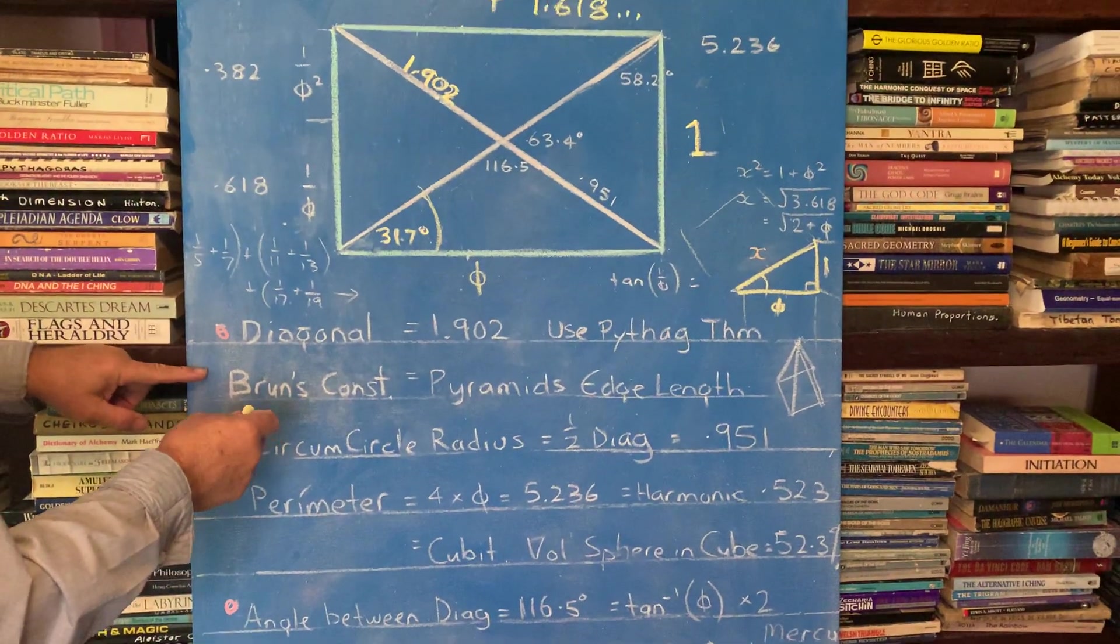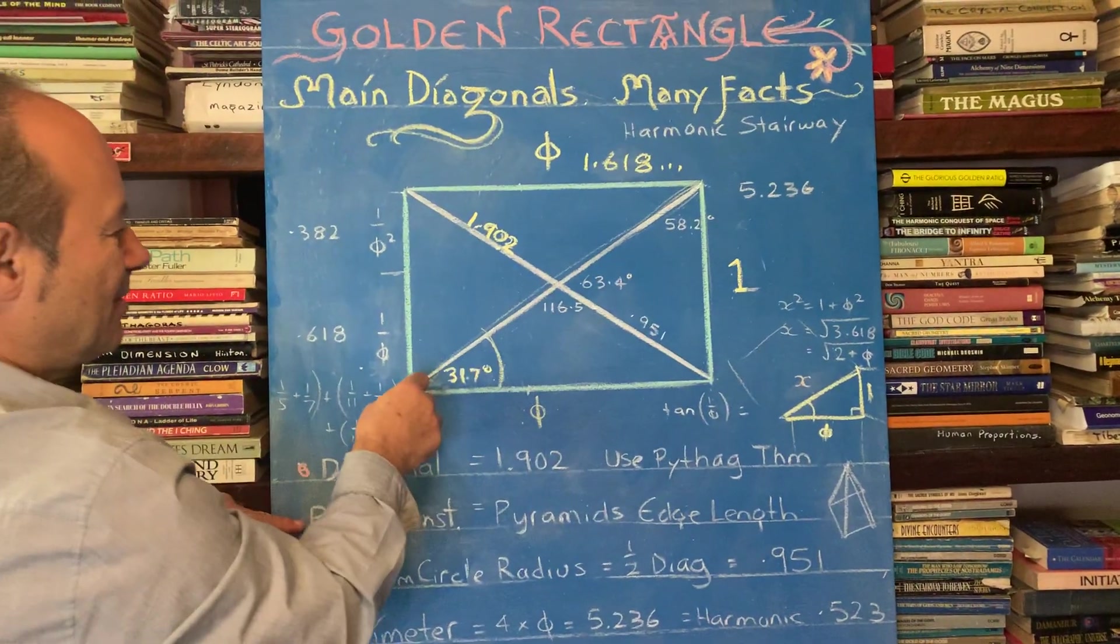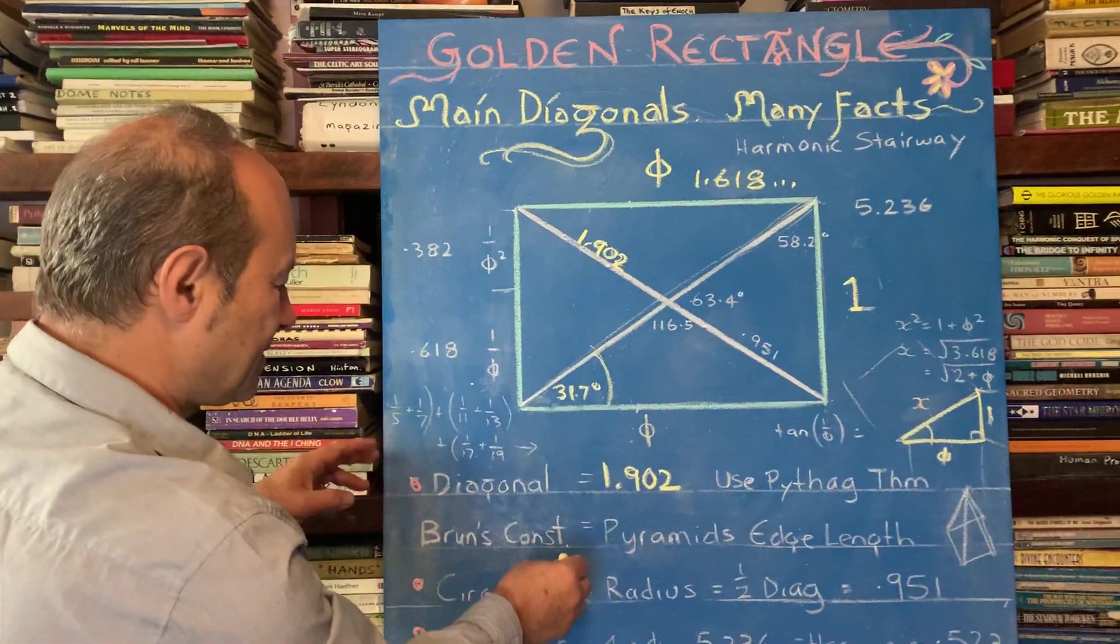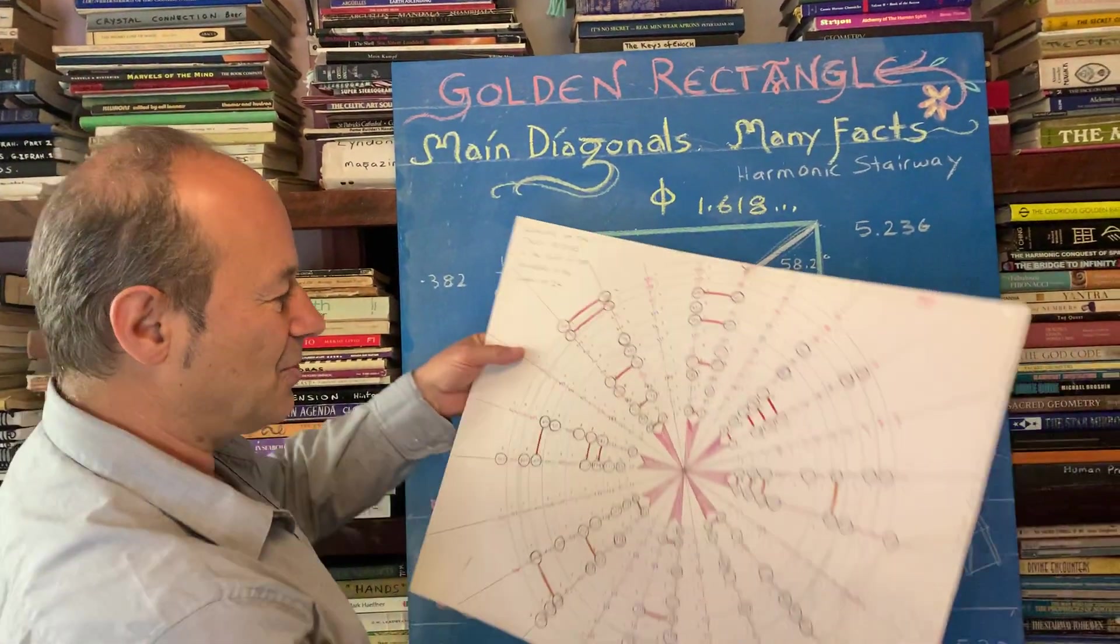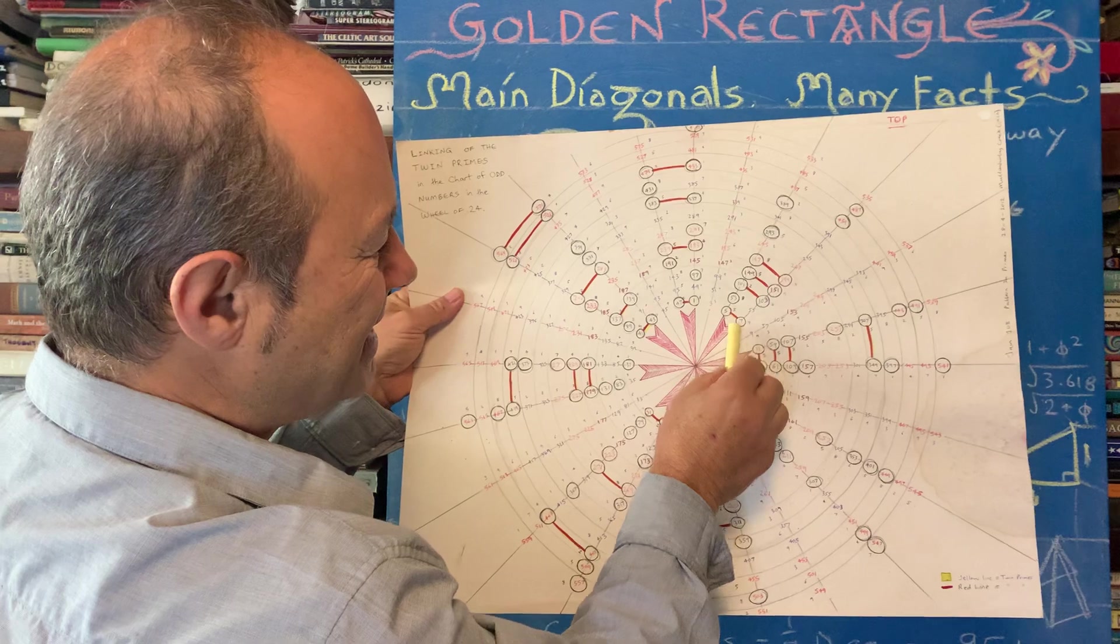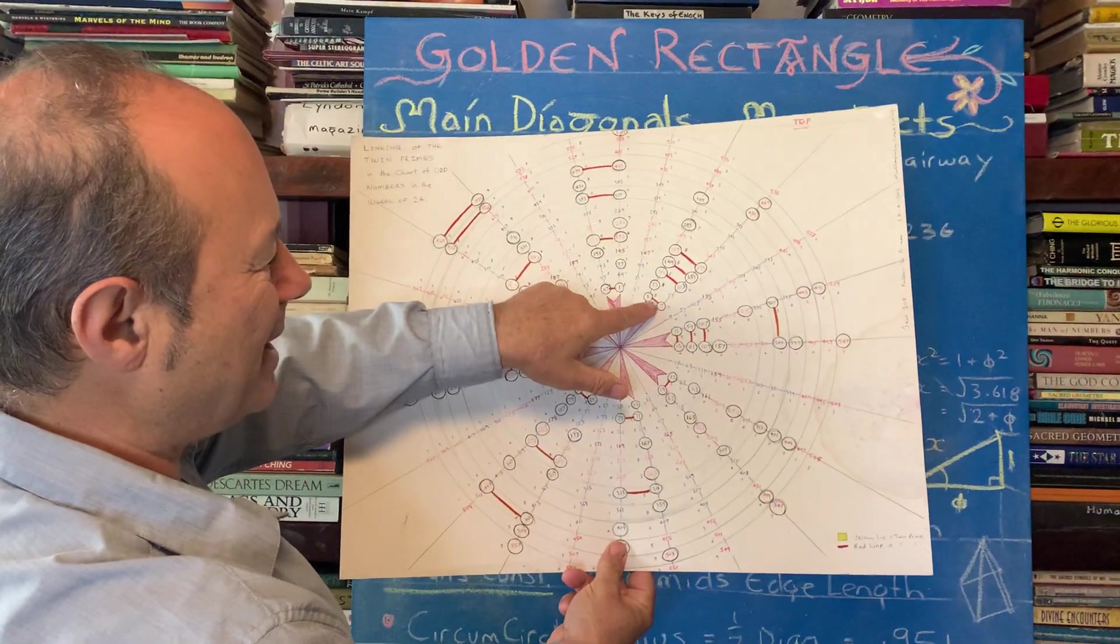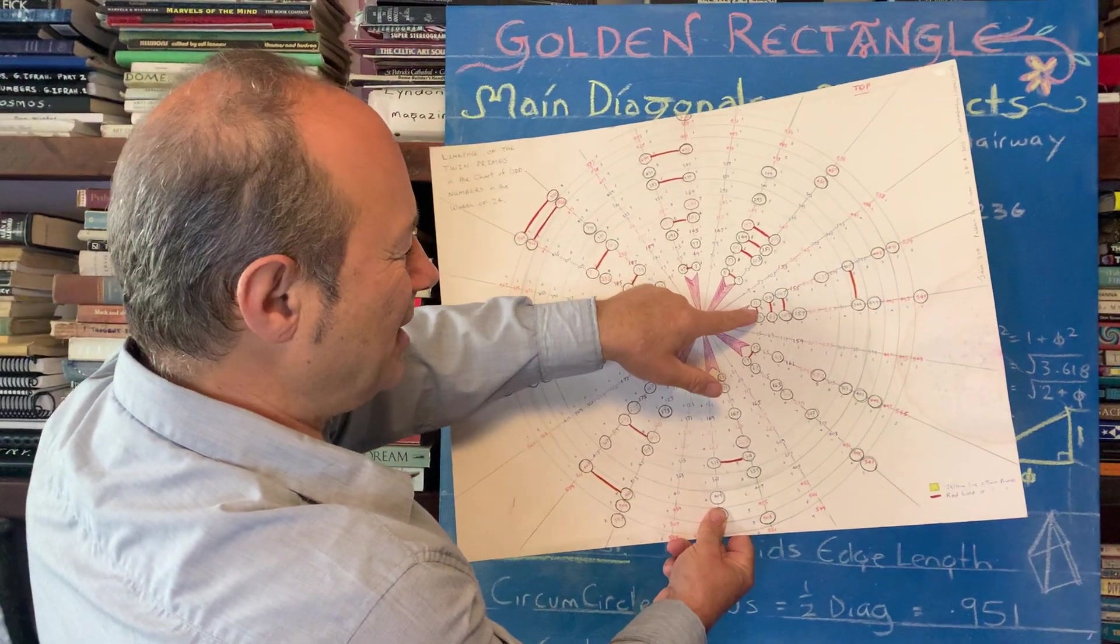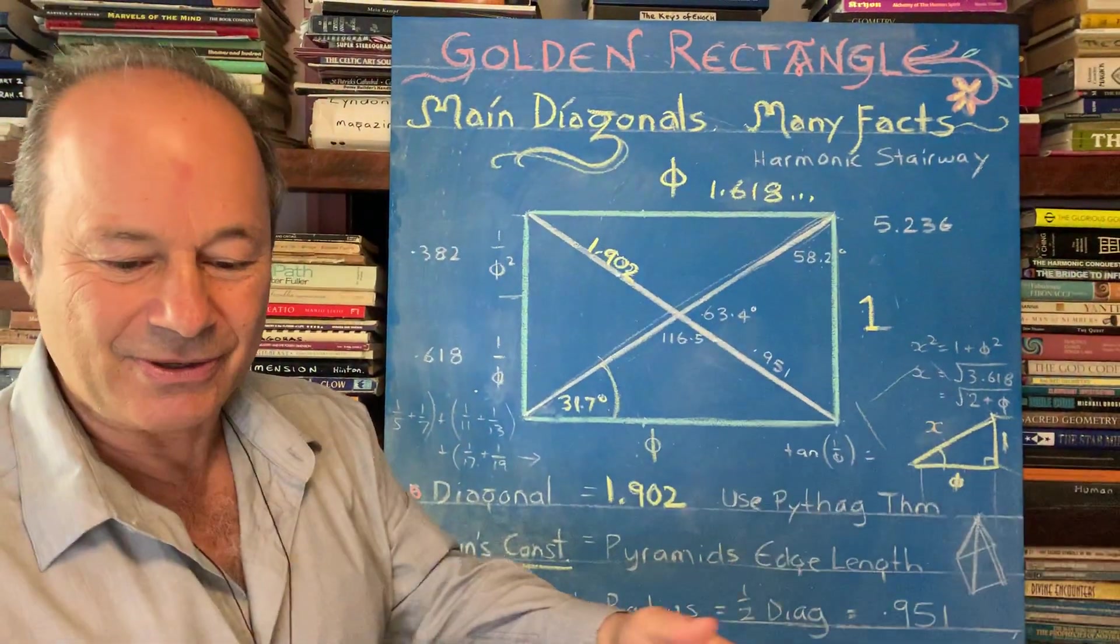Now, just before, the other thing about Brun's constant, the other thing about this number here, this diagonal is 1.9, is that it's also the sum. It's called Brun's constant here. Brun's constant is important in physics because he took all the twin primes. So when you look at all the prime numbers, like 1, 5, 7, 11, 13, 17, 19, twin primes are separated by a division by six. So between 5 and 7 is 6. Between 11 and 13 is 12. They're all divisible by six. So the twin primes, he took the reciprocal of them.